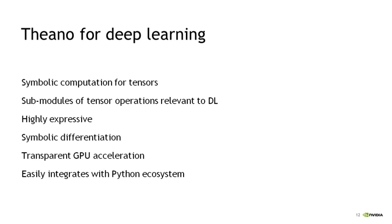Theano is highly expressive. If you want to add a new activation function or a new loss function, it's just the same as defining any other Python function, as long as you conform to the Theano syntax. The sky's the limit in terms of network architectures you can build and training algorithms you can use. Theano is integrated within the Python ecosystem, so it's very easy to build Theano applications into larger Python data analytics applications. At the same time, Theano compiles down to efficient C and CUDA code, so you get high-speed computation and the ability to transparently leverage GPU acceleration.